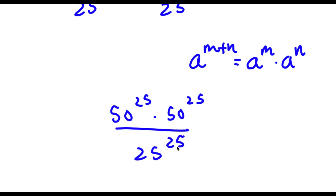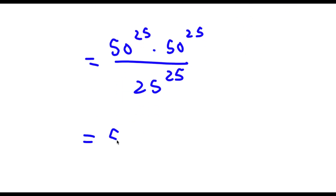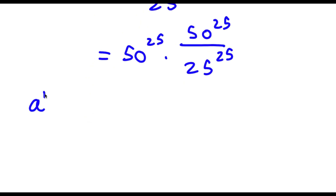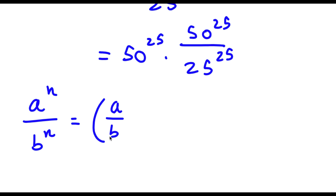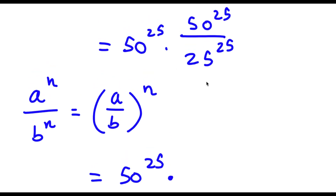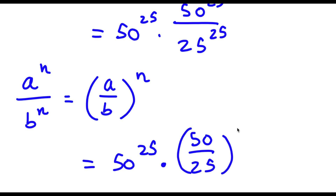Now I have this over 25 to the power of 25. So this is the same thing as 50 to the power of 25 times 50 to the power of 25 over 25 to the power of 25. Now if I have something in the form a to the power of n over b to the power of n, this is simply equal to a over b to the power of n — essentially factoring out the exponent. So in this case I have 50 to the power of 25 over 25 to the power of 25, and I can rewrite this as 50 to the power of 25 times 50 over 25 to the power of 25.